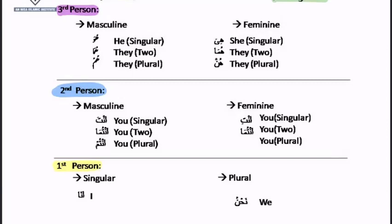For the second person feminine, I say 'anti' — meaning 'you,' my single sister — for singular. 'Antuma' when there are two sisters. To summarize: 'anta,' you singular; 'antuma,' you two; 'antum,' you plural (more than two) — for masculine. 'Anti,' you singular; 'antuma,' you two — for feminine.